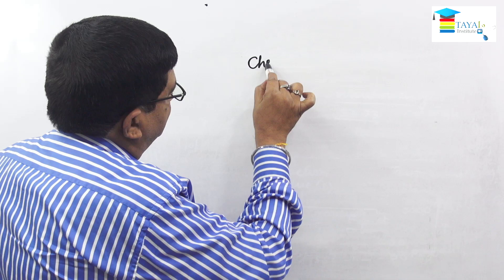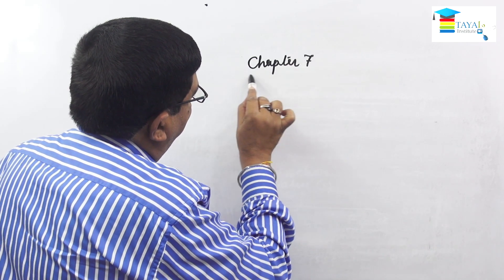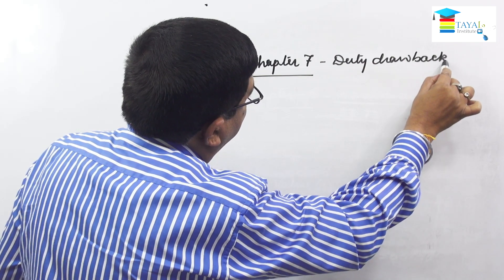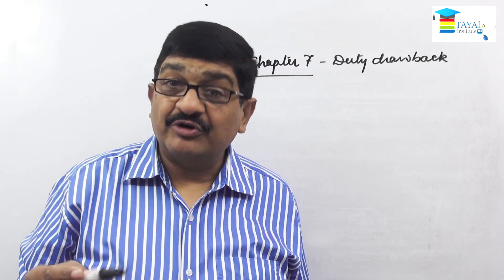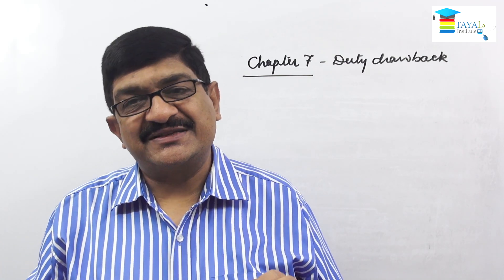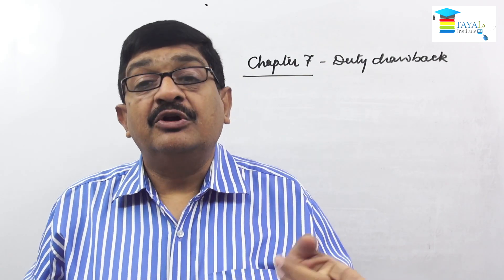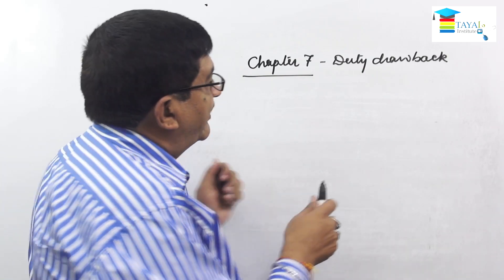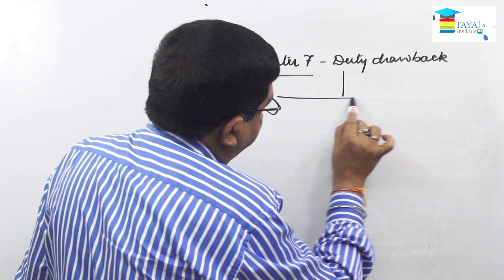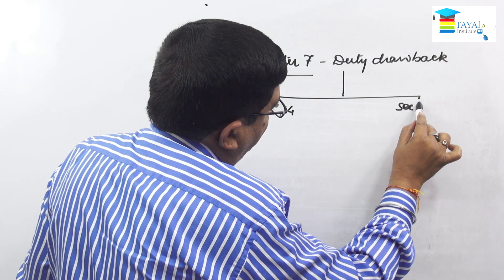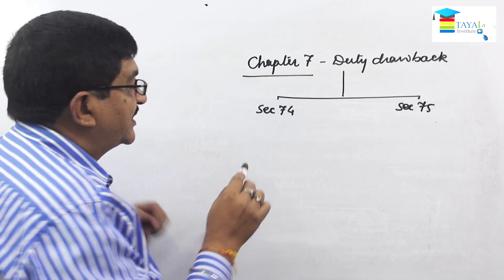Chapter seven is about duty drawback. In the simplest understanding, duty drawback is a refund of duty. It is comprised from section 74 up to section 77 — a very small chapter but very relevant, not only for the purpose of exam but also in your professional career. Duty drawback exists under two different provisions: section 74 and section 75.